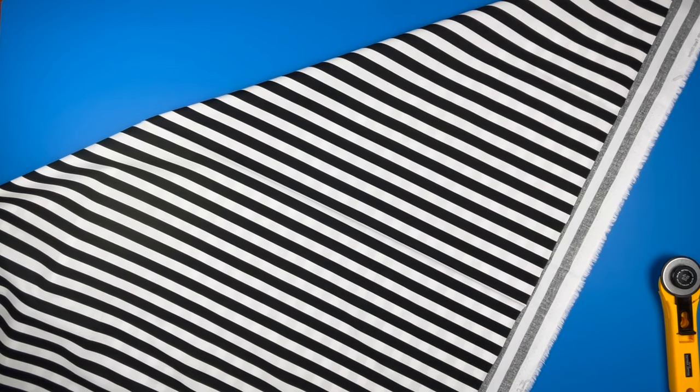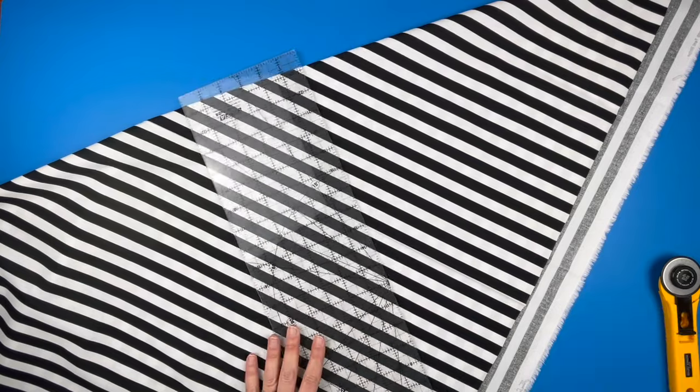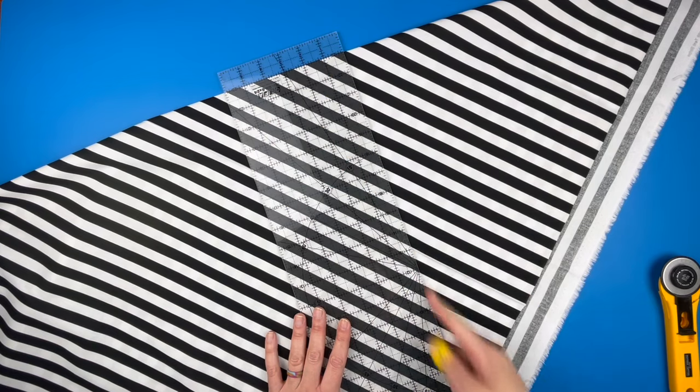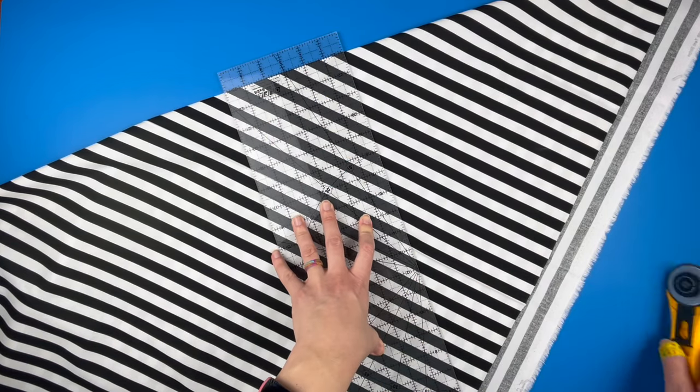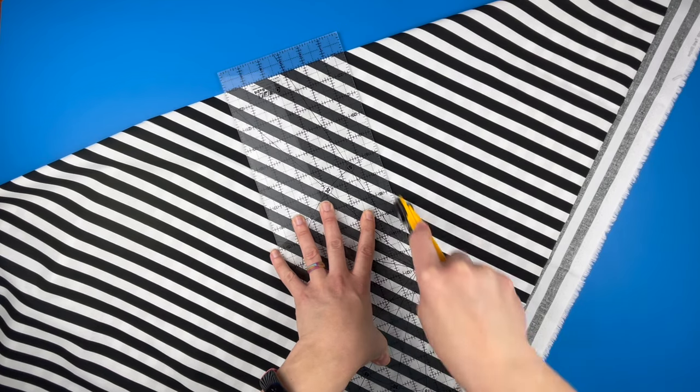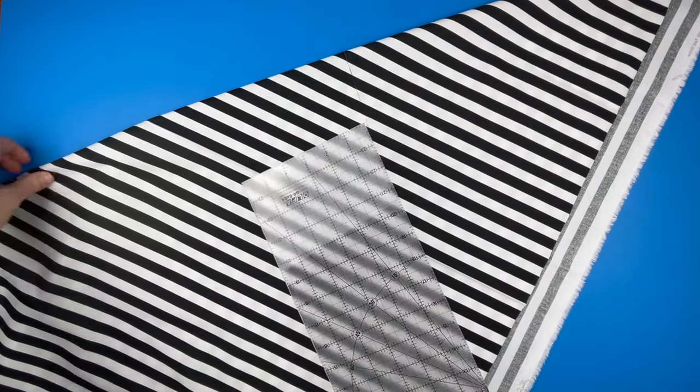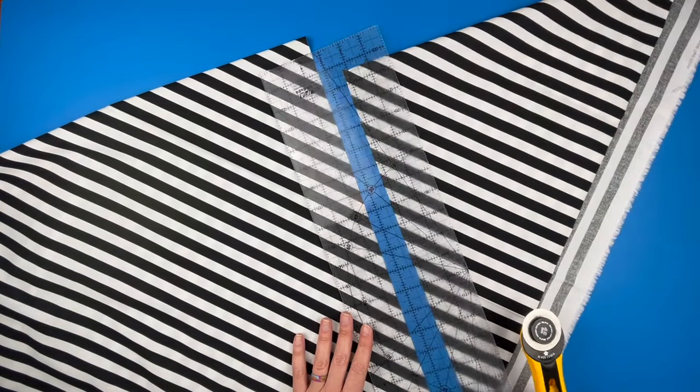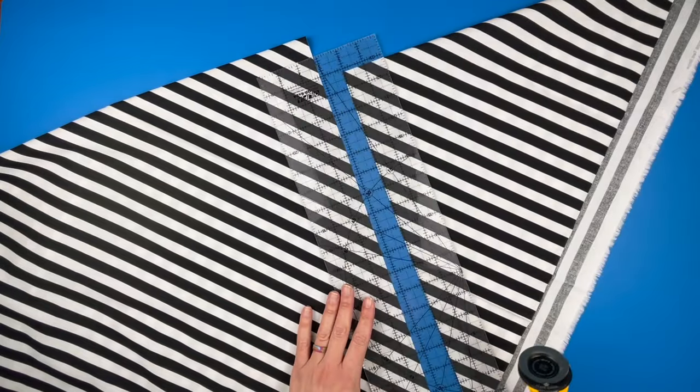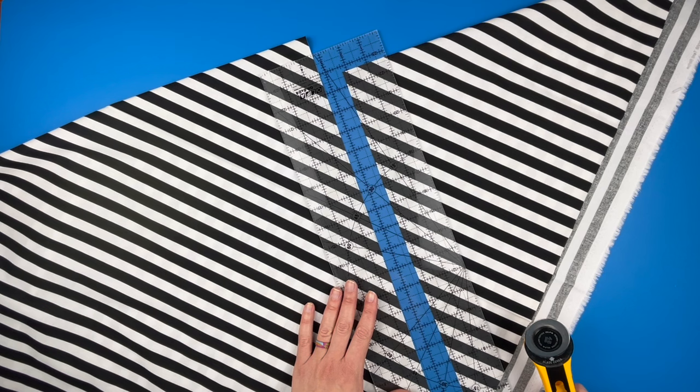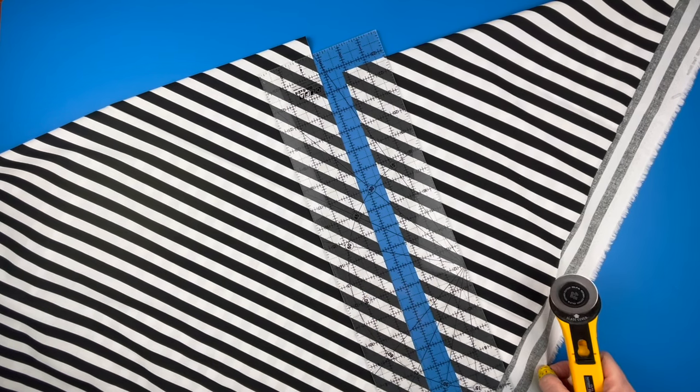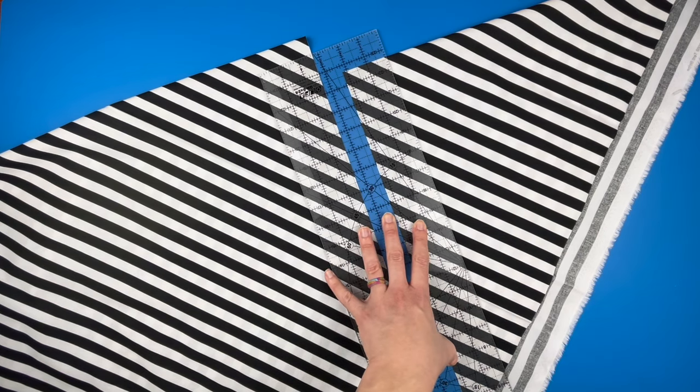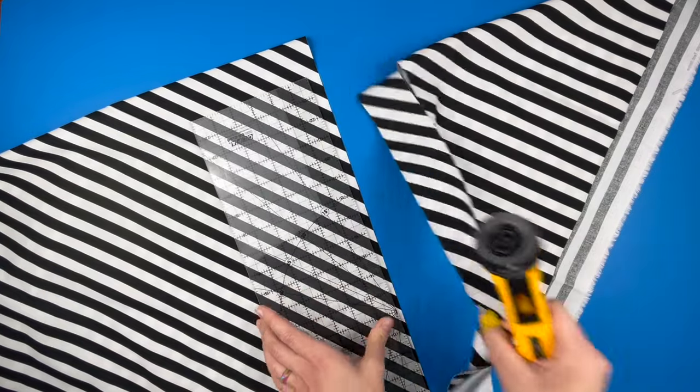I'm going to go ahead and take my straight ruler and line it up so that it is square 90 degrees up here and cut. Now I have a bigger piece to my left and a smaller piece to my right. I prefer two and a quarter inch. You may prefer two and a half or something else. I like two and a quarter. Generally, I rate my patterns for two and a quarter, but I account for two and a half in the fabric requirements.